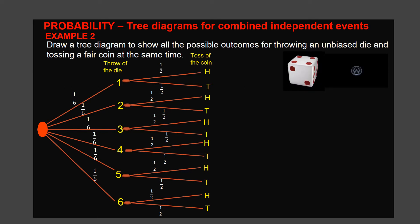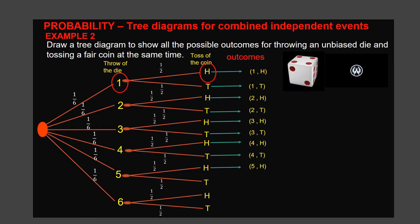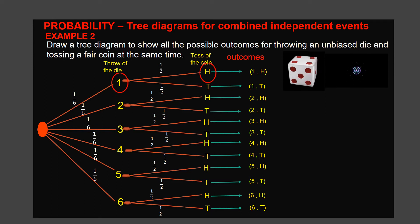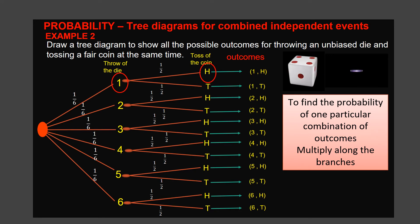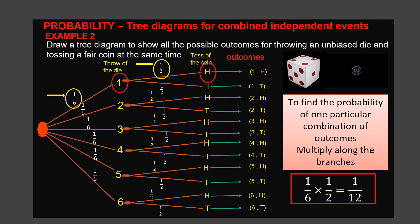Let's list all the combinations of this event. Outcomes are 1 and H, 1 and T, 2 and H, 2 and T, and so on. To find the probability of one particular combination of outcomes, we multiply their probabilities along the branches. For example, the probability of getting 1 and H: we multiply 1 over 6 times 1 over 2, which equals 1 over 12.